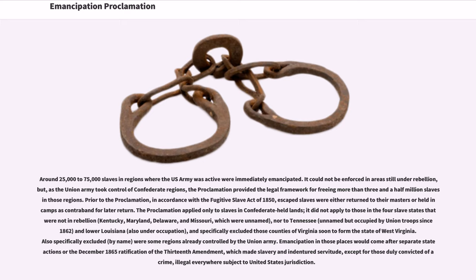Also specifically excluded by name were some regions already controlled by the Union Army. Emancipation in those places would come after separate state actions or the December 1865 ratification of the Thirteenth Amendment, which made slavery and indentured servitude, except for those duly convicted of a crime, illegal everywhere subject to United States jurisdiction.